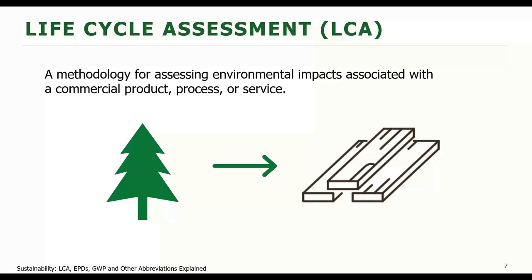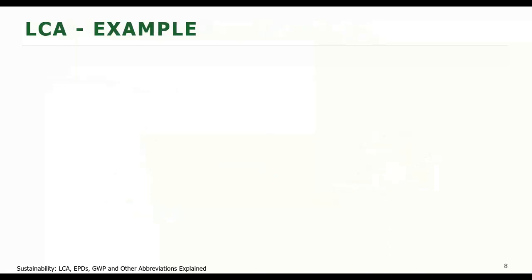Let's start with a definition of lifecycle assessment, or LCA. It's defined as a methodology for assessing environmental impacts associated with a commercial product, process, or service. In common language, LCA is an accounting for the potential environmental impacts when making a product. Here's a more detailed example of just the part of the process that happens in the mill itself. Logs are unloaded to the log yard, sorted, and protected from insect attack. Fuel is consumed and equipment is in service. Recycled water may be used to protect the logs. The manufacturing process begins with debarking, which requires electricity to run the machines.